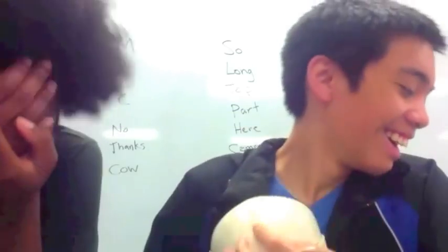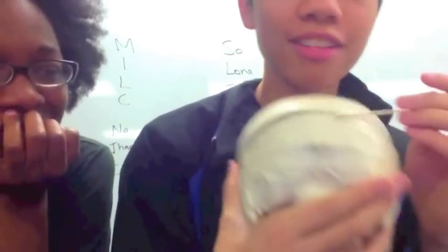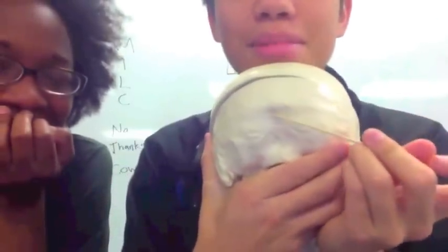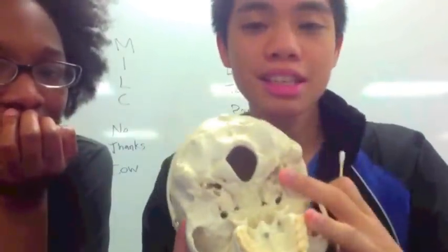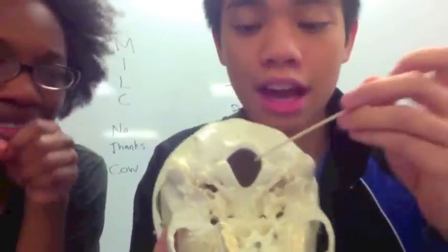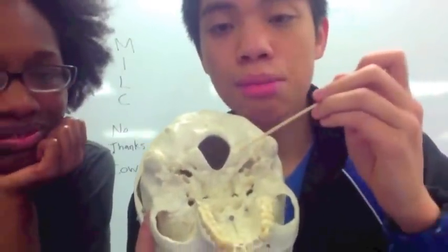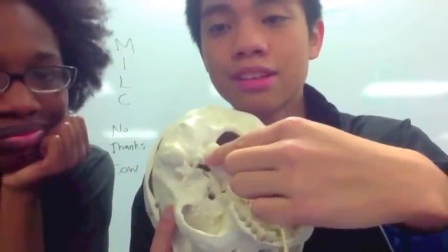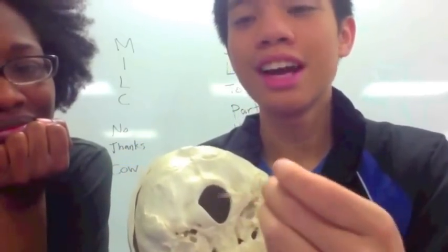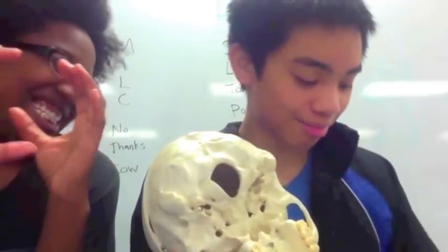This is the occipital bone — the back side right here. This little bump right here is called the external occipital protuberance. Then in the back here you have the occipital condyles, which is where your vertebra would sit — that's how your head connects to the vertebra. Your spinal cord will enter this hole, which is called the foramen magnum.